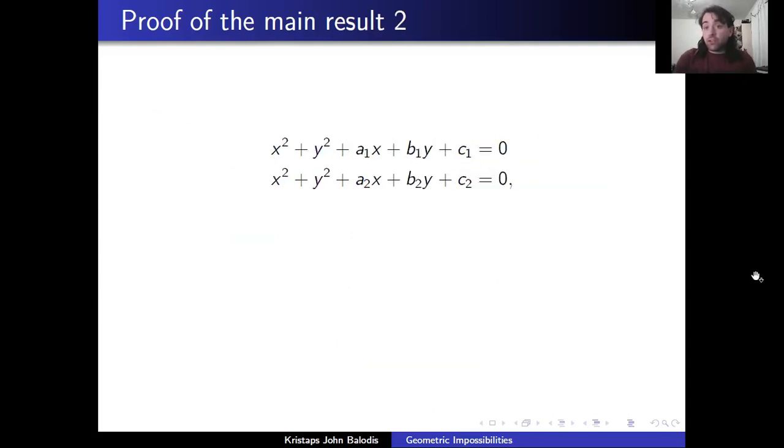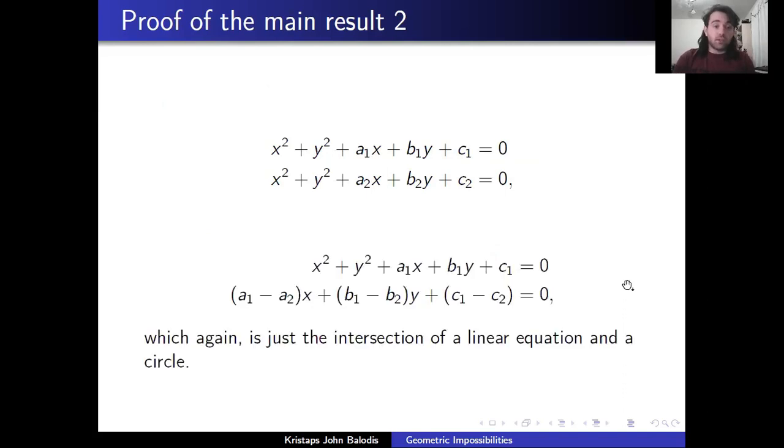Finally, the last case is if we have the intersection of two circles. But if you subtract the second circle from the first circle and get that as our second equation, well now look, our first equation is still just the equation of a circle. And our second equation, this is just an example of a linear equation. And so we can actually just use the result we proved that the intersection of a linear equation and a circle is at most a degree two extension applied to these. We're going to get our x and y, and we'll see it's just going to be involving some square root.